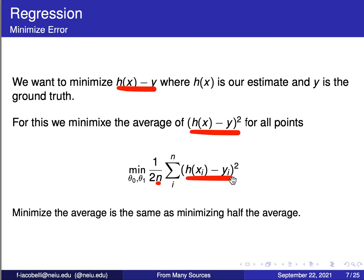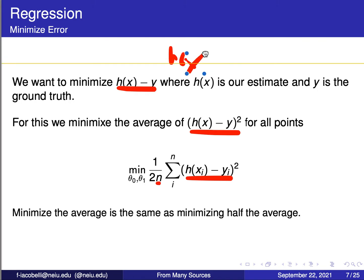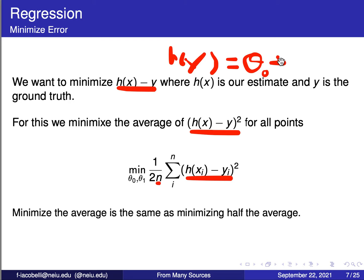Because this is a straight line, the equation h(x) has the following form: it has a constant theta zero plus theta one times x one. So that's the equation of a straight line. What we want to find are the values of theta zero and theta one that minimize this error function. That is what we're going to do.